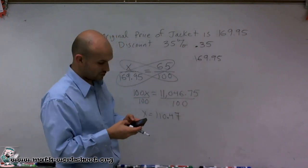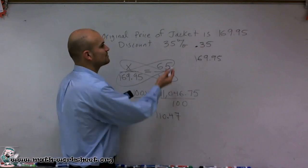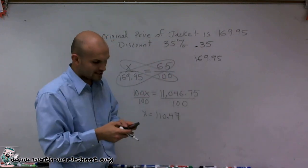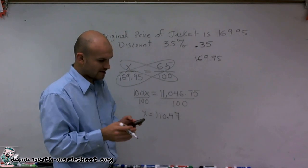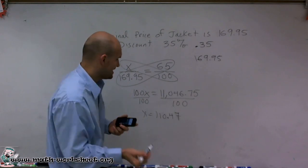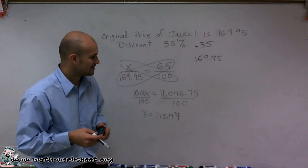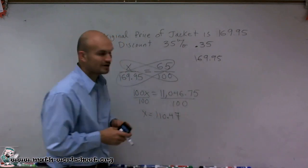So what I can do is take the total value, 169.95, and then multiply it by the percentage that we're going to have, which would be 65%, 0.65. Make sure you convert it to your decimal, and then again, what you get is $110.46.